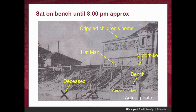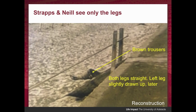They noticed a man with a hat standing above the stairs, looking on. He didn't hang around for very long and they didn't know who he was. They did notice the deceased man but didn't know he was dead — they also thought he might be a drunk sleeping it off. Because the staircase was in the way, all they saw were a pair of legs. They initially saw both legs straight out, and then Gordon thought he saw the left leg slightly drawn up as he was leaving. They also reported that the trousers were brown — an important detail for future lectures.